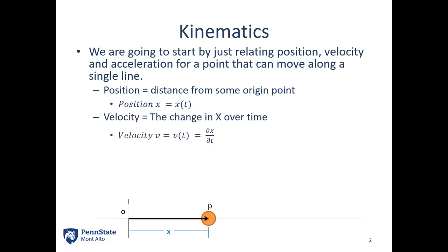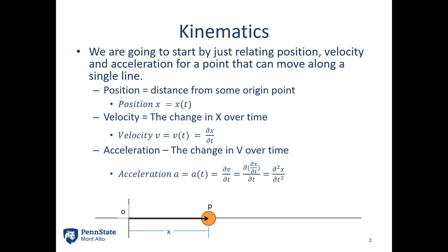I'm going to have some velocity as well. Velocity is the change in position over time. So our velocity v, which also might be changing over time, is going to be the derivative of the position over time. Similarly, the acceleration a at any one instant, or a of t describing the acceleration over time, is the derivative of the velocity over time, which is the derivative of the derivative of position — or the double derivative of position over time.